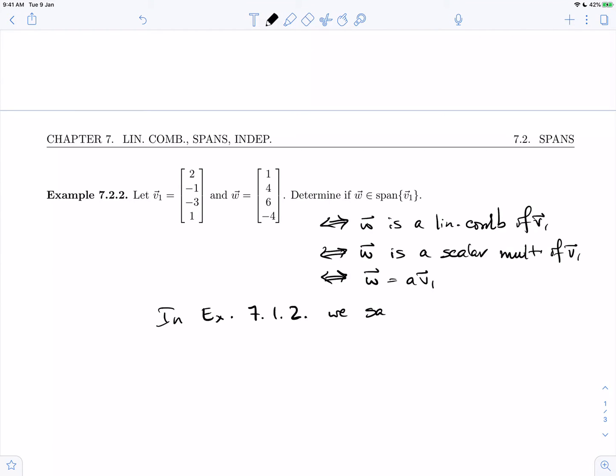In that exact same example from the previous subsection, we saw this was not possible. We saw that w was not a scalar multiple of v1. Therefore, w is not in the span of this single vector v1.